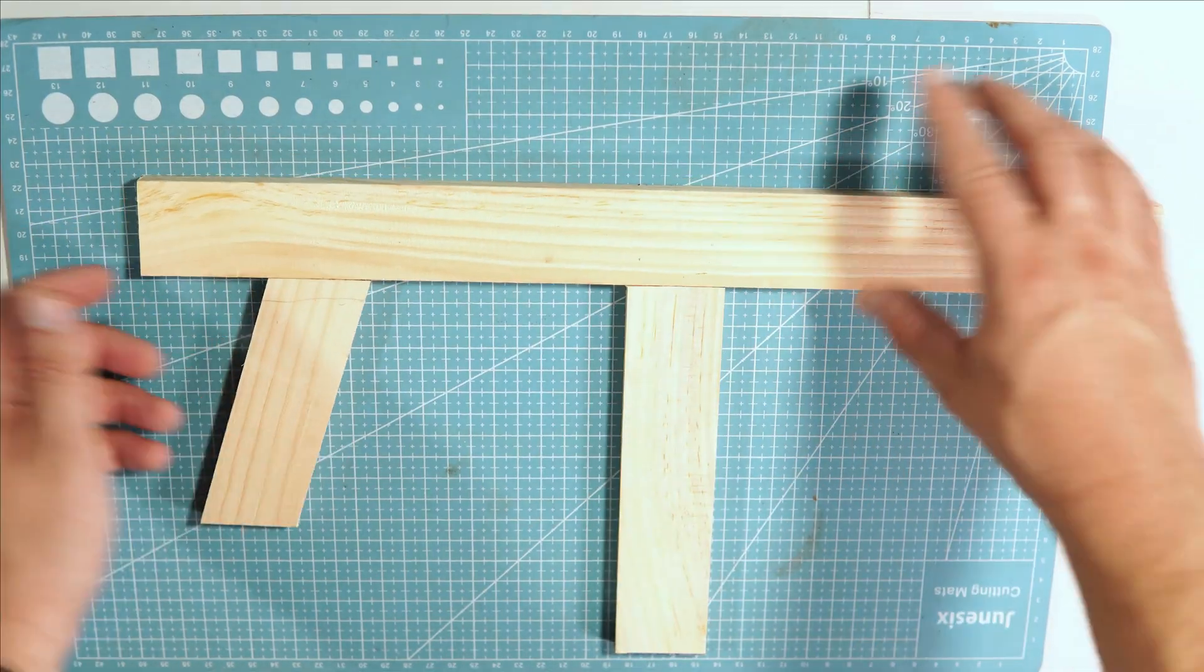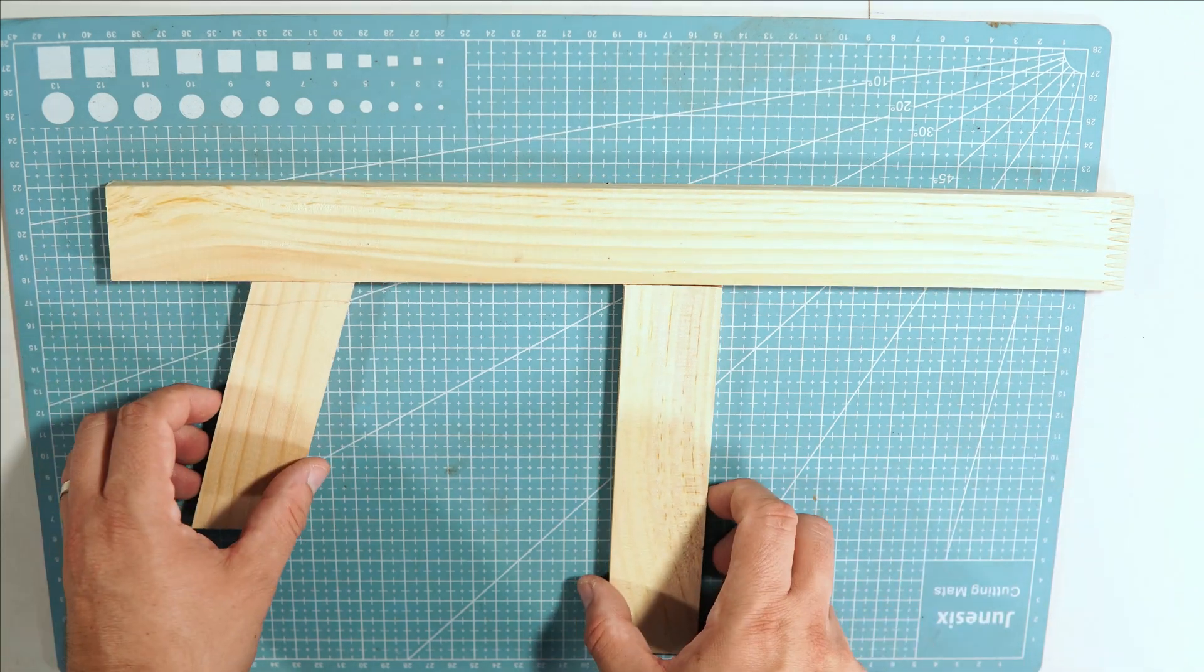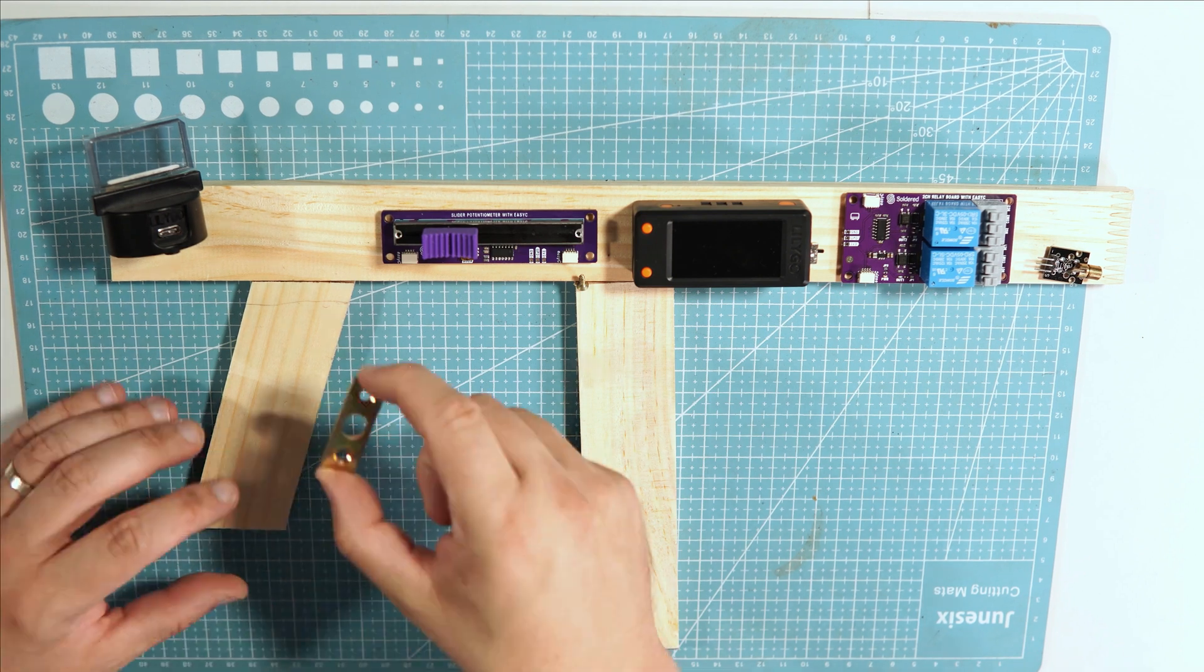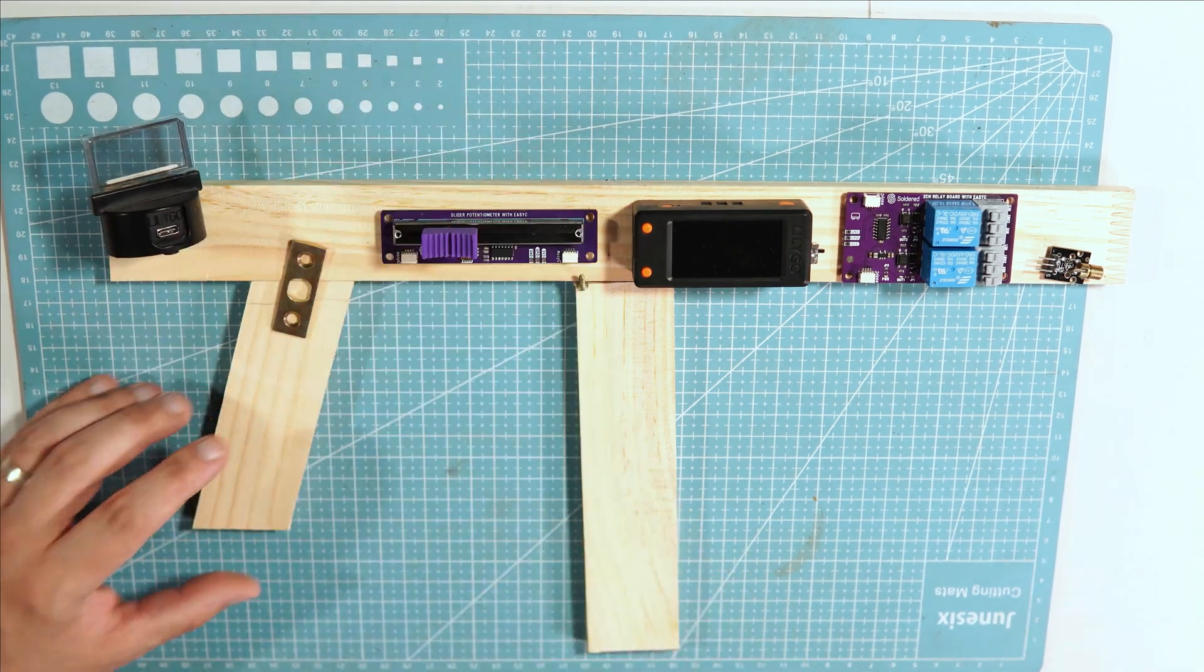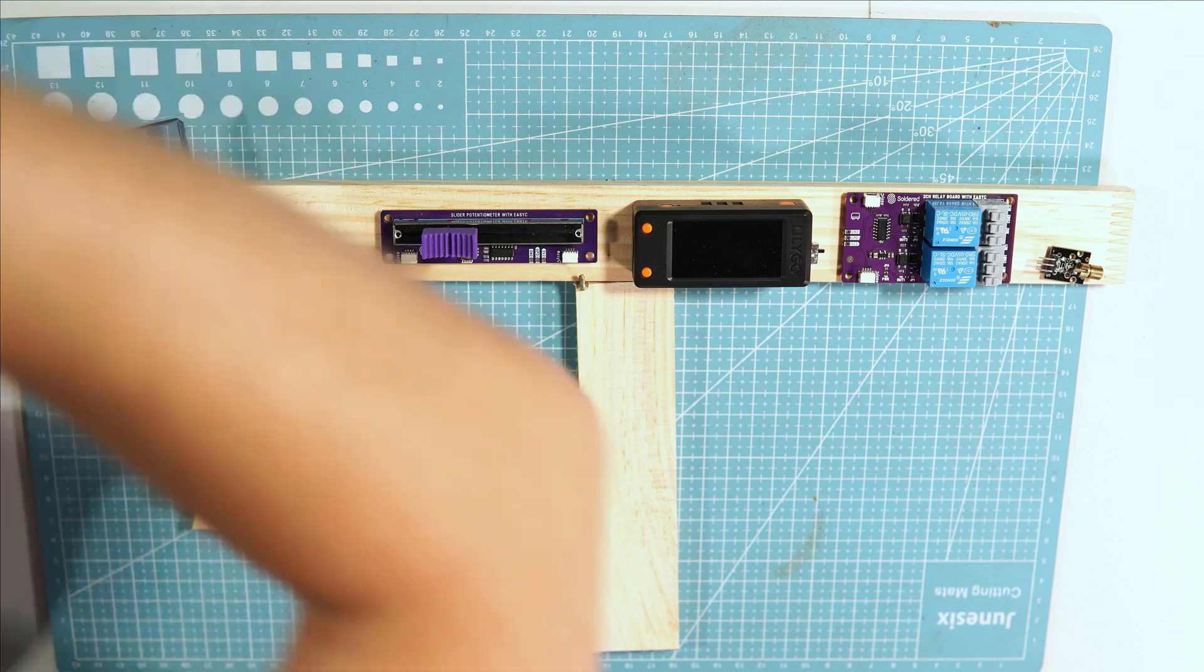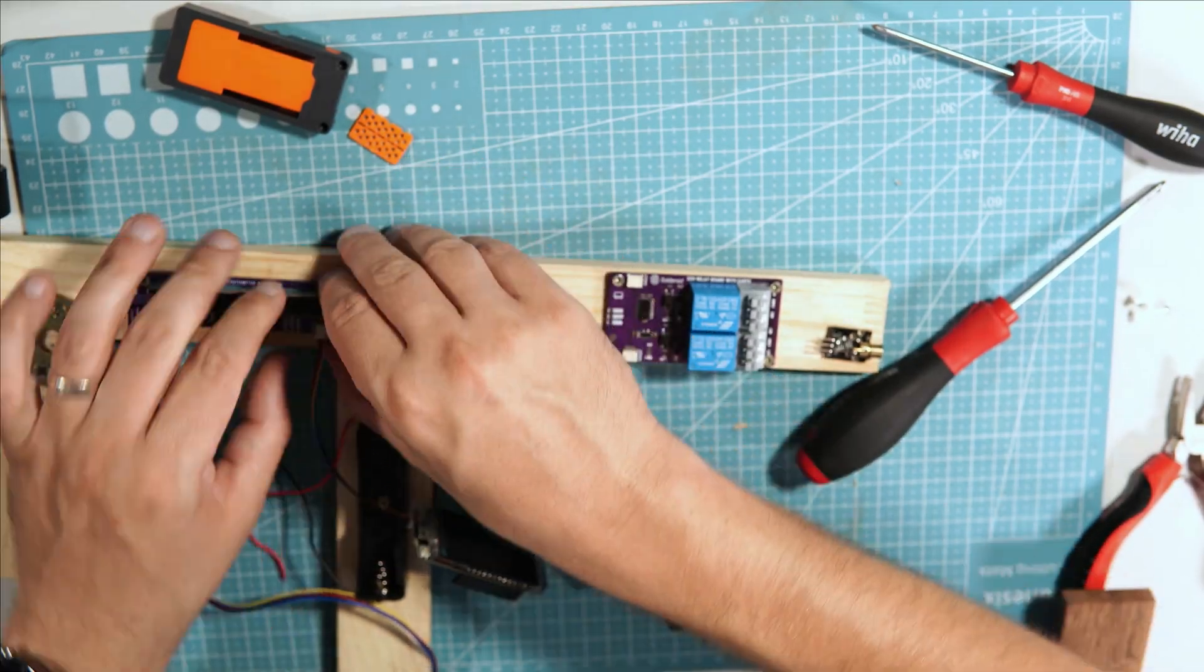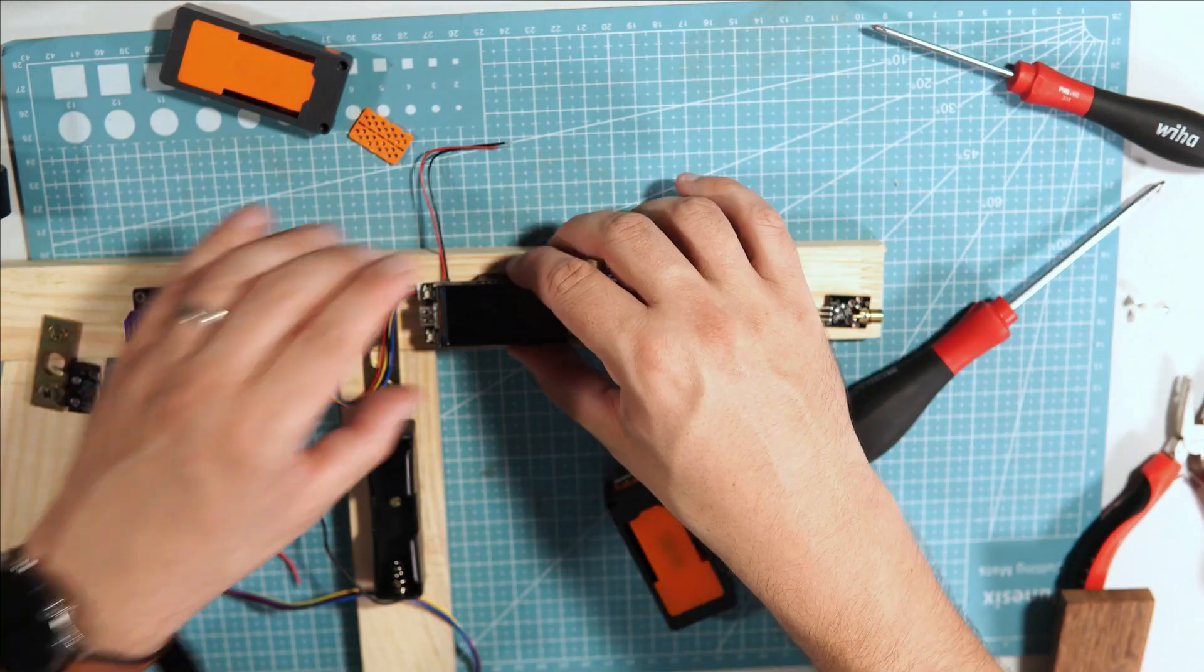It all starts with a wooden frame. At this stage, the gun looks similar to the ones we used to make as kids. But soon it will feature modern technology: displays, lasers, optical sight, microcontrollers, and much more.